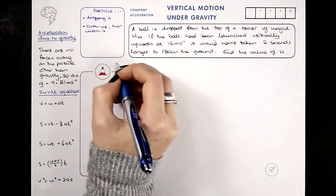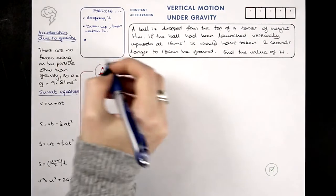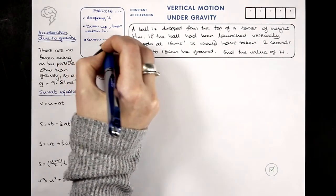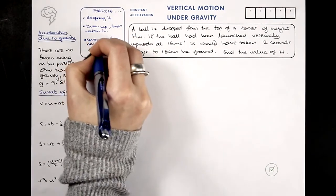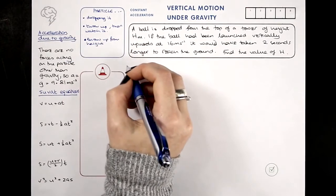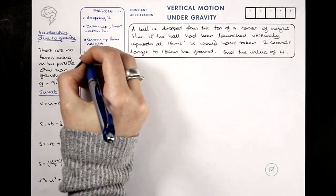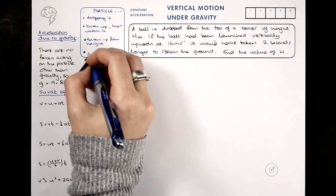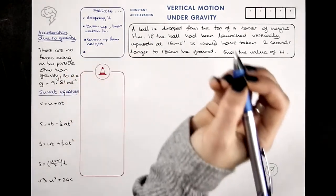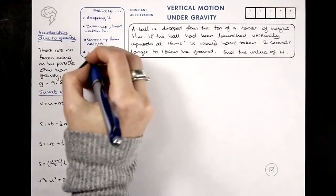Or we could stand on a tower and then throw it up, so throw it up from a height and then watch it go up and then see it go down past where I just threw it from and then further down, or I could throw it down from a height, so I could stand on top of a tower and chuck it downwards.